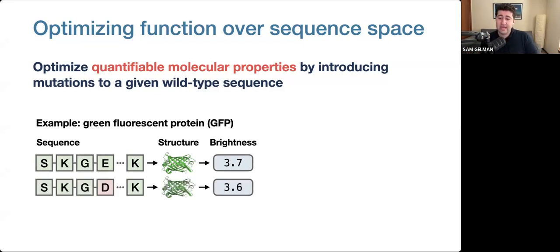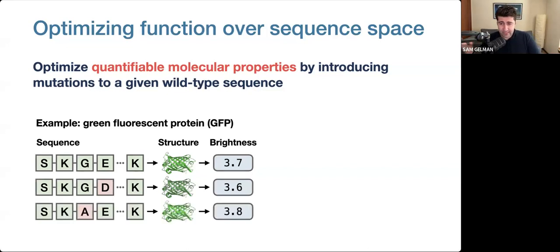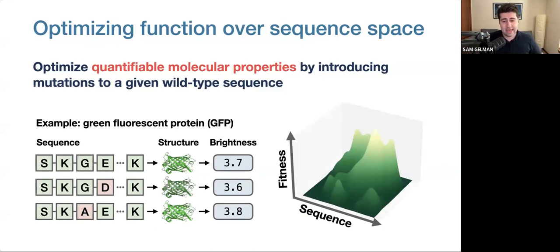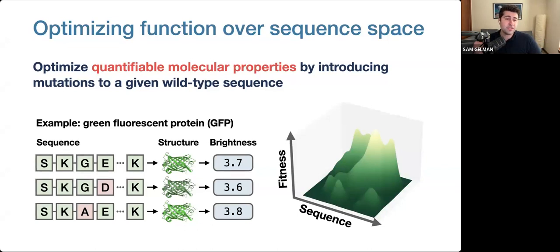By introducing an amino acid substitution to the sequence, we can alter the protein structure and consequently its function. Some variants might have lower brightness — like this one here, which has a brightness of 3.6 — and other variants might have brightness that exceeds the wild type. To visualize the design process, I like to imagine traversing a 3D fitness landscape, where each point represents a unique sequence and the height represents function — in this case, again, brightness. Our goal is to find peaks in the landscape where the function is maximized.